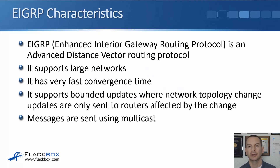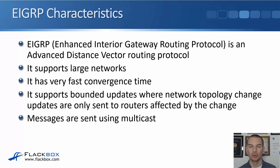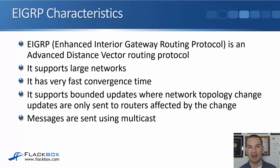In this lecture, you'll learn about the characteristics of EIGRP and we'll do a basic configuration as well. EIGRP stands for the Enhanced Interior Gateway Routing Protocol. Its predecessor was IGRP, but that's a really old legacy protocol — it's not used anymore. EIGRP supports large networks and has a very fast convergence time, way quicker than RIP. It supports bounded updates where network topology change updates are only sent to routers affected by the change, making it more efficient. Messages are sent using multicast rather than broadcast, so they'll only be processed by other EIGRP routers.